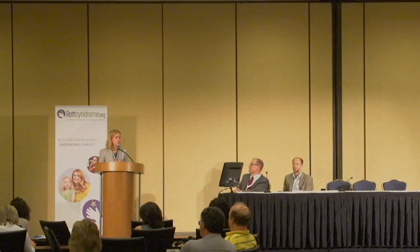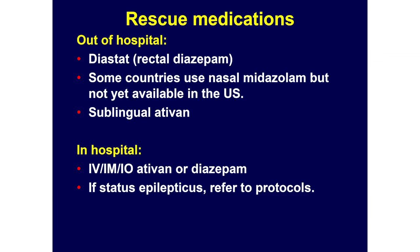For rescue medications, in the out-of-hospital setting we use diastat most frequently — a rectal form of diazepam. Some countries are using nasal midazolam, which is starting to be used a little in the U.S. but isn't available in a reliable form right now. Sublingual Ativan is sometimes used as well. In the in-hospital setting, we use intravenous, intramuscular, or interosseous ativan or diazepam, and specific protocols for status epilepticus.